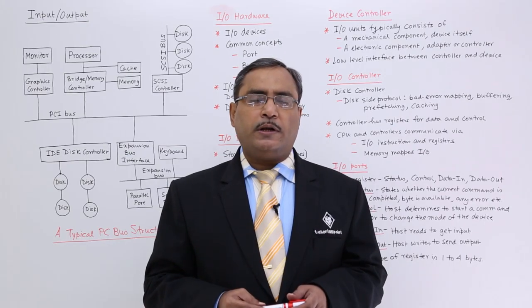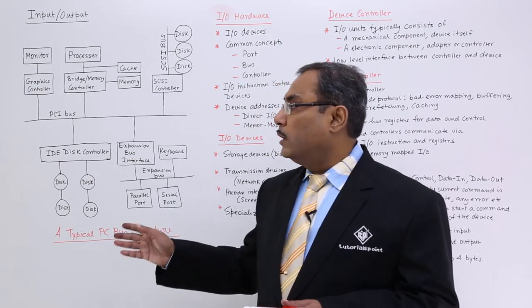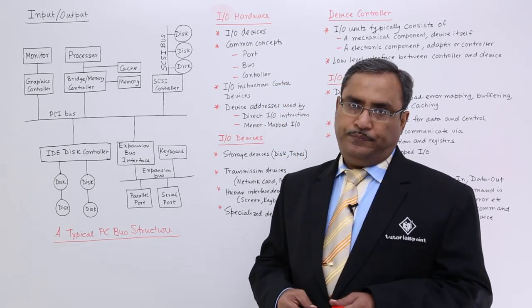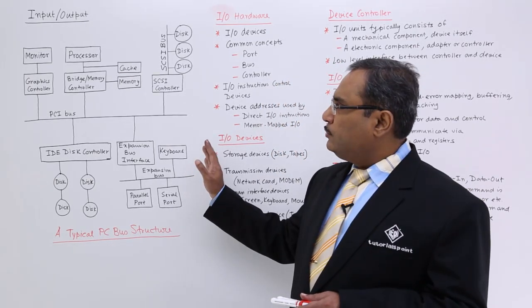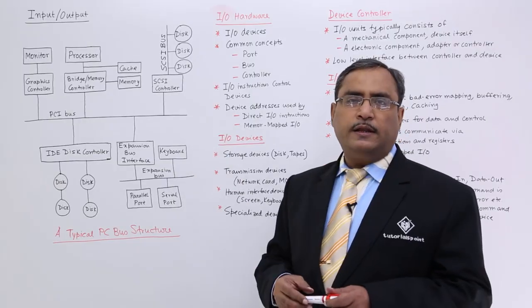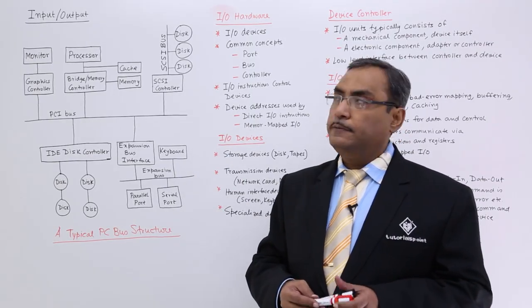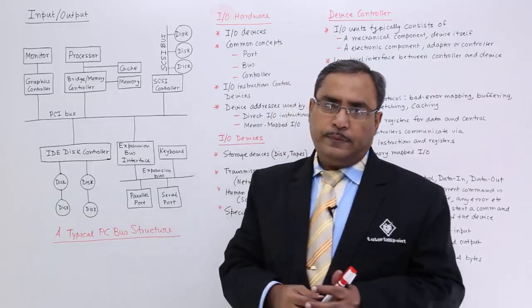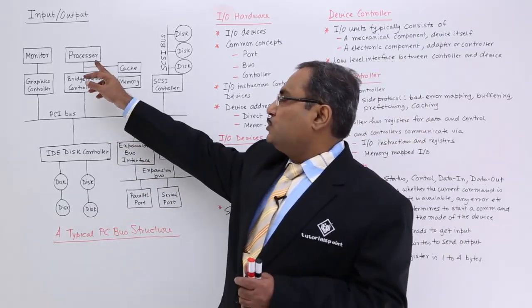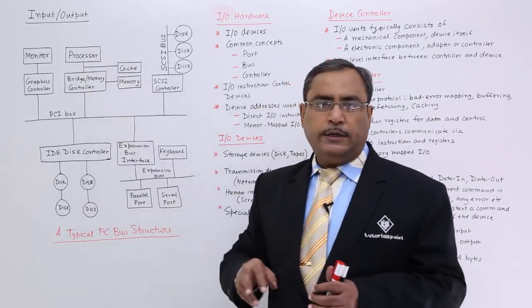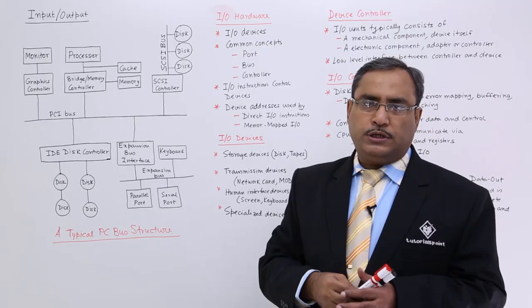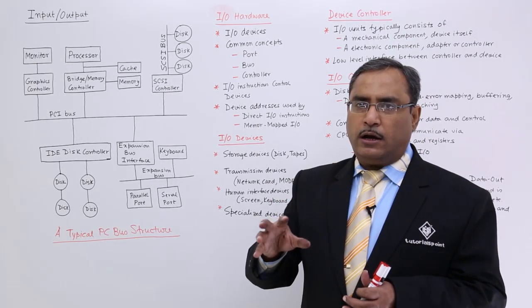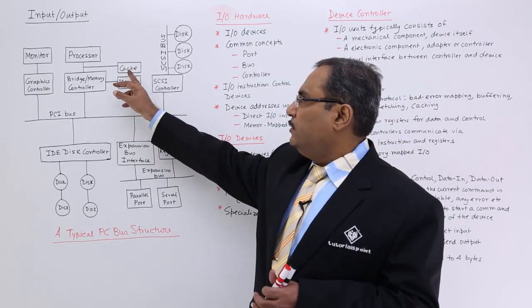To have a detailed discussion on I/O, I have drawn one block diagram — a typical PC bus structure — to show how the different devices are getting connected. This is the main processor, the CPU. This processor has cache memory connected, because the processor will store its frequently required data or instructions in this particular cache memory.